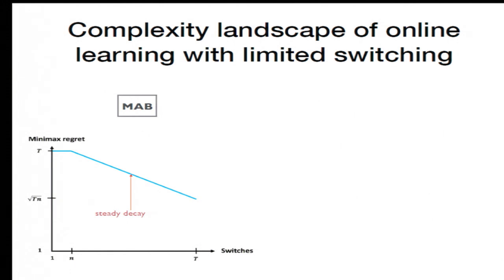And so here you can see the minimax regret as you vary the switching budget. On the right side you have the standard minimax rate of square root of T roughly. And on the left-hand side if you have no switches you have T, and the question is how does it interpolate between these two points?